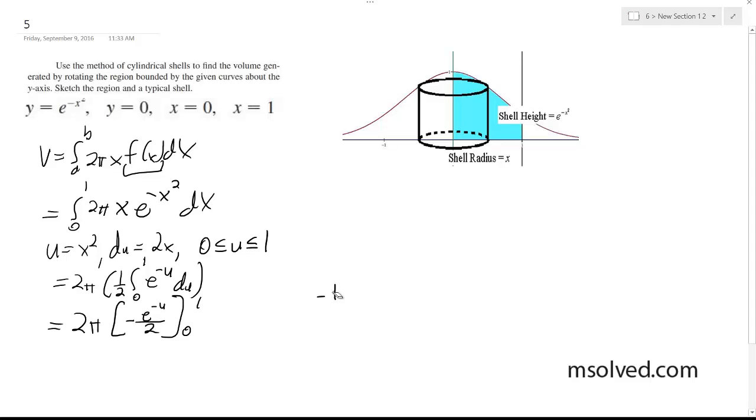Actually, I made a mistake. Sorry. I'm looking at my notes, I've got to go back in here and re-substitute in what we actually had. So it's 2π negative e to the negative x squared over 2 from 0 to 1.